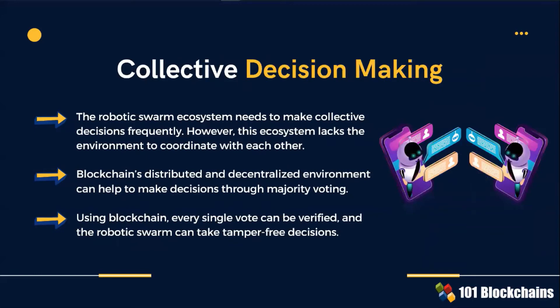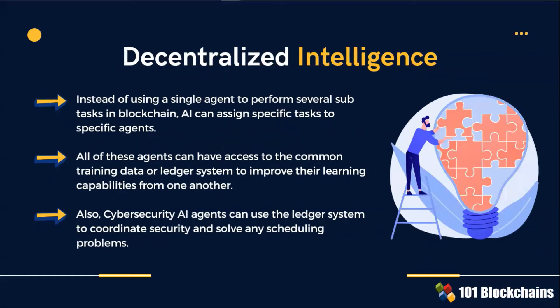Blockchain's distributed and decentralized environments can help to make decisions through majority voting, empowering users to run collective decision-making. Instead of using a single agent to perform several sub-tasks in blockchain, AI can assign specific tasks to specific agents. Cybersecurity AI agents can use the ledger systems to coordinate security.